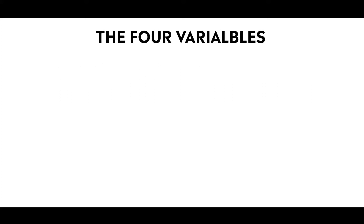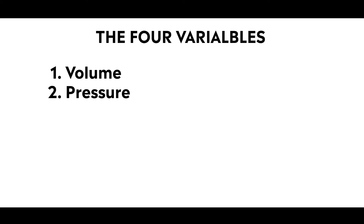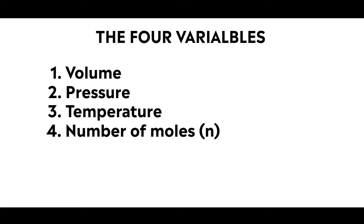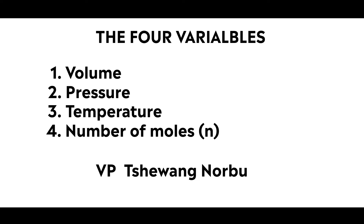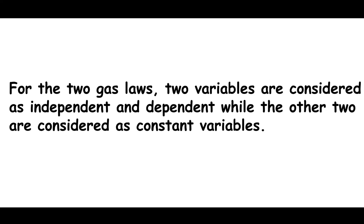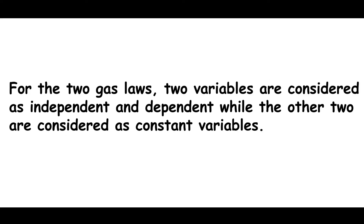There are four variables: volume, pressure, temperature, and number of moles. If you have difficulty remembering these four variables, I have a mnemonic for you — Vipi Tsewong Norbu. For the two gas laws, we consider only two variables: one as independent and the other as dependent, while we keep the other two constant.